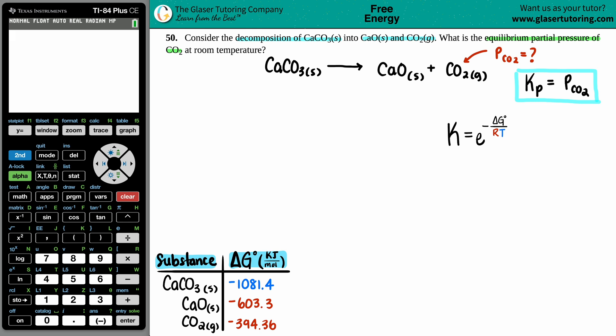So equilibrium constant K, it does not matter whether you're looking for a Kc, Kp, Ka, Kb, it's all going to be the same. So we could just smack on a Kp here, it doesn't matter. But this equals the e value on the calculator raised to the negative delta G divided by R times T.